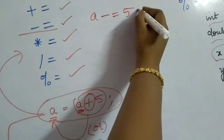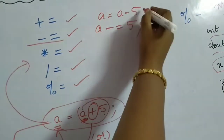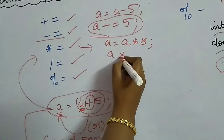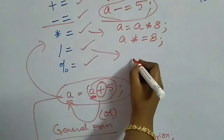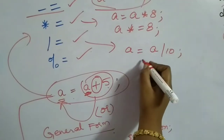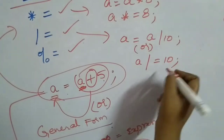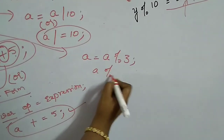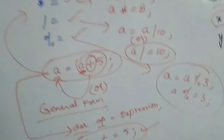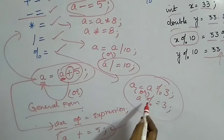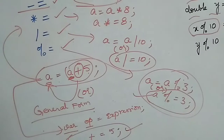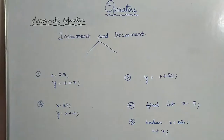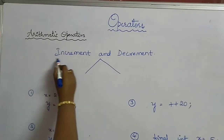For example, a is equal to a minus 5 can be written as a -= 5; a is equal to a into 8 becomes a *= 8; a by 10 becomes a /= 10; and a is equal to a mod 3 becomes a %= 3. Both forms are equivalent, but compound assignments are recommended as they execute faster. The last two arithmetic operators are increment operator (++) and decrement operator (--).